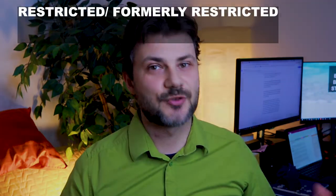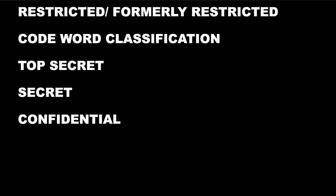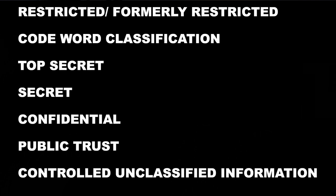For example, the US government has seven levels: restricted data, formally restricted data, code word classification, top secret, secret, confidential, public trust, and controlled unclassified information.